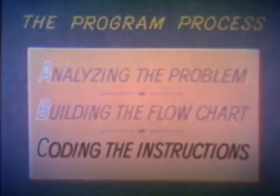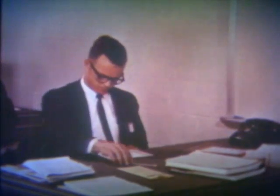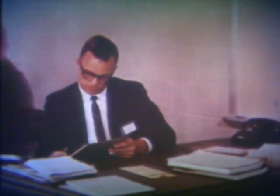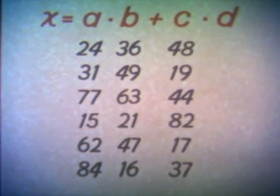That is your third step: coding the instructions. As the programmer, you may do it, or you may turn it over to a coding specialist. Coding is translating the steps of the flow chart into computer language that the computer can read and store and then act upon. To see in a small way what is involved, let us suppose an operation calls for computing the values of X in this equation, using various given values for A, B, C, and D, and then printing out the solutions.